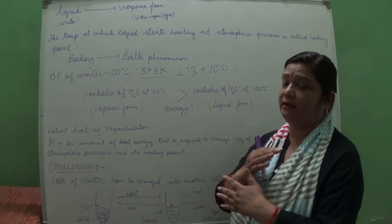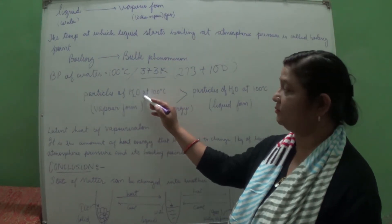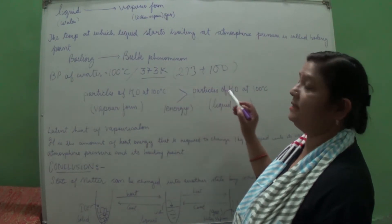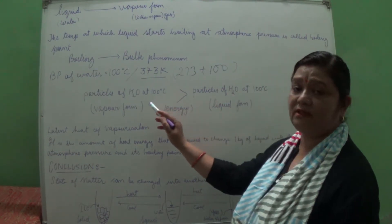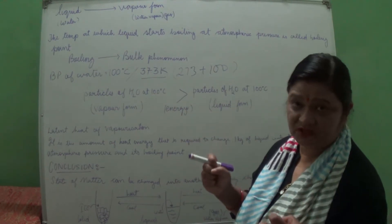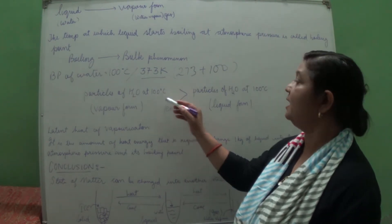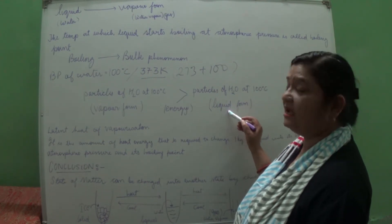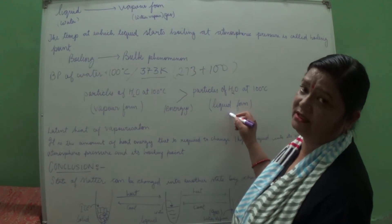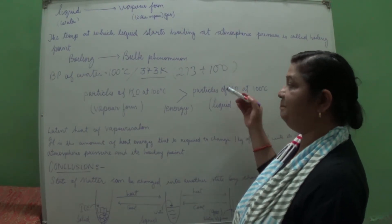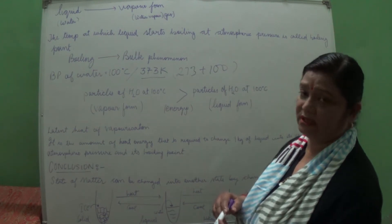When liquid is changed to vapor form, the particles of water in the gaseous form will have more energy than the particles of water in the liquid form — energy is greater in the vapor form. The intermolecular space is more, so particles can move freely and inter-particle forces are less. In liquid, space is less, inter-particle forces are more, and kinetic energy is less than in gas. This explains latent heat of vaporization and latent heat of fusion in terms of kinetic energy.